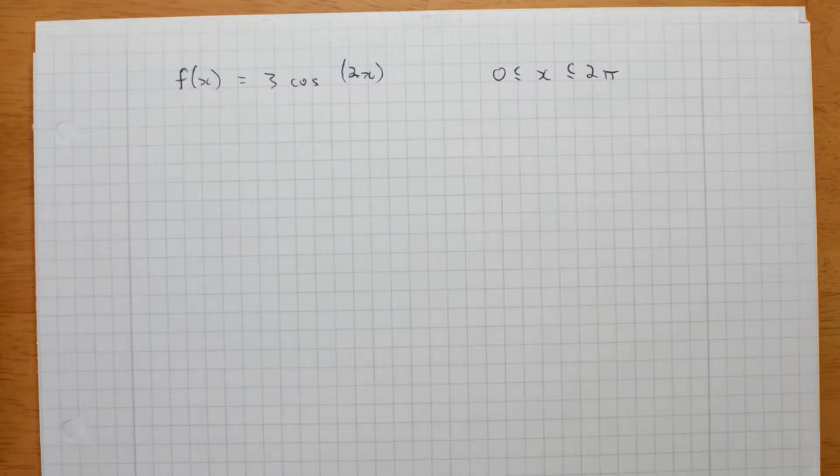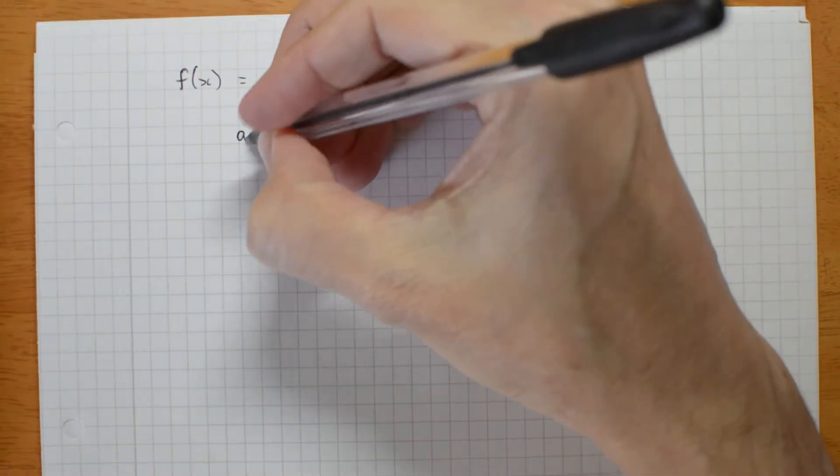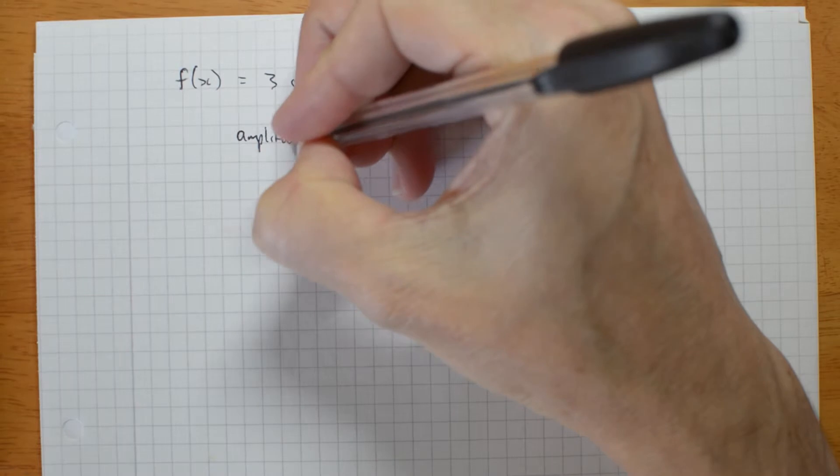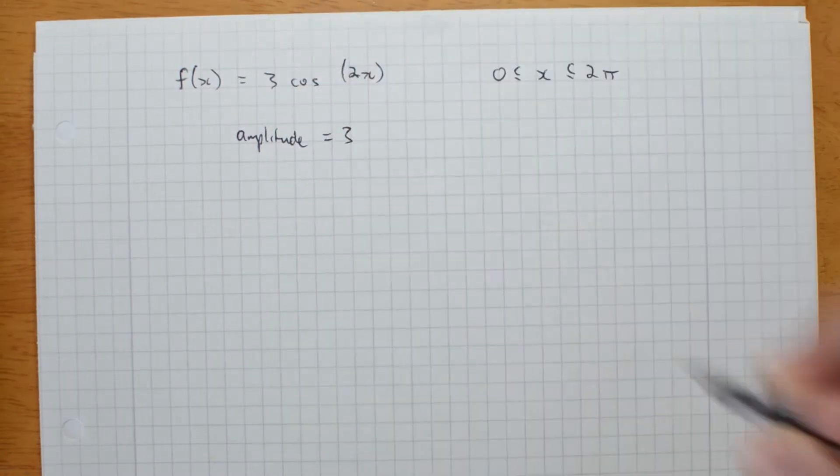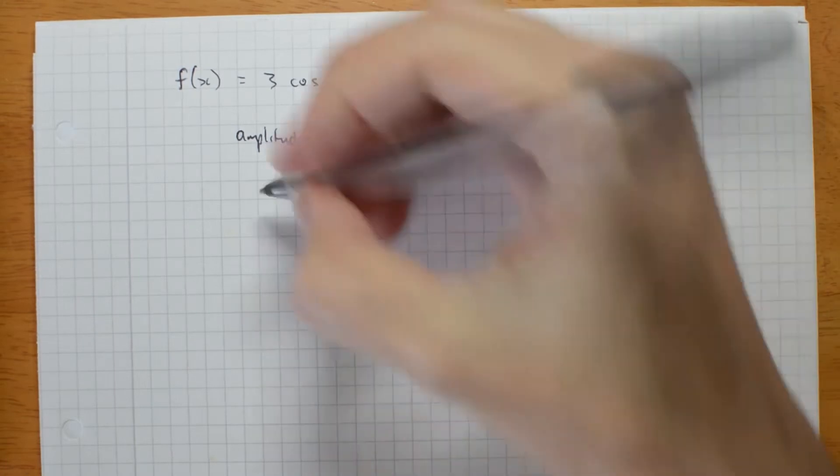So let's have a go at graphing 3cos2x between 0 and 2pi. First, pull out the things we know. The amplitude is 3. That's this number here. This number gives me the period, but not directly.